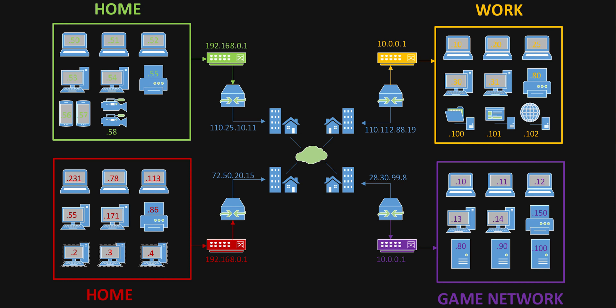Other ports you might want open — say you want to connect to the file server at work. You'd set up a port forwarding rule for RDP, which is port 3389, pointing it to 10.0.0.100. But what if you also wanted to remote connect into the application server or web server? Easy — go into the router and set up a port forwarding rule pointing to 10.0.0.101, with the internal port set to 3389 but the external port set to 3390. You can set the external port to anything you want — I like to keep within a similar range so it's easier to remember when typing from home.